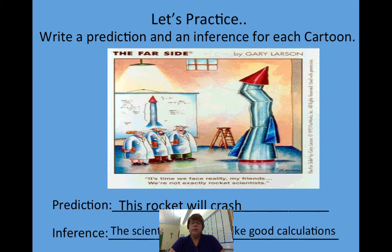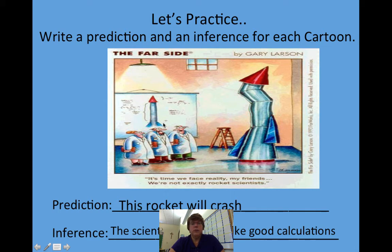I'm going to say the scientists did not make good calculations, because you can see in the drawing that they had instructions — so maybe when they were measuring they didn't measure right. You could also write that they didn't follow the directions, or that they weren't really scientists, or they didn't know how to build a rocket. All of those inferences would be acceptable.